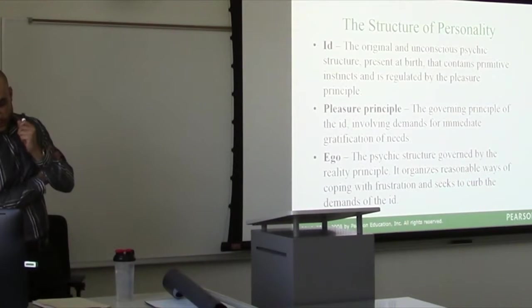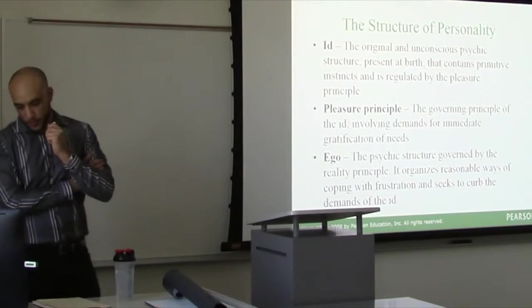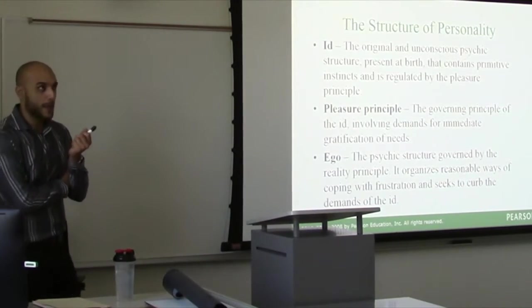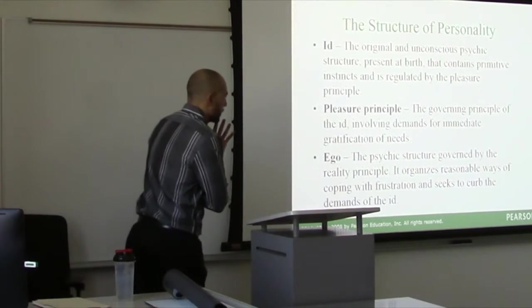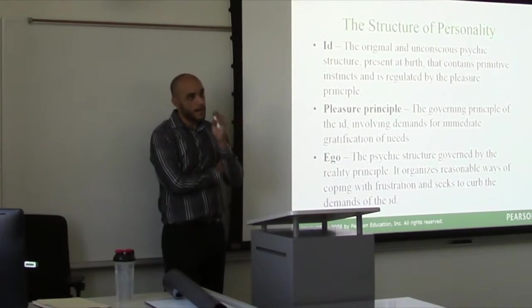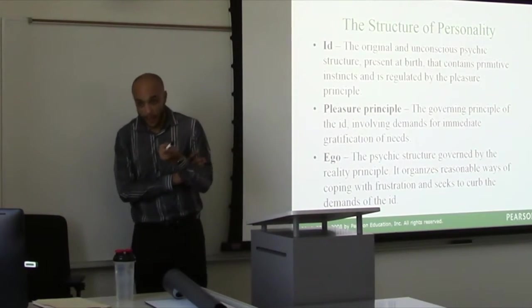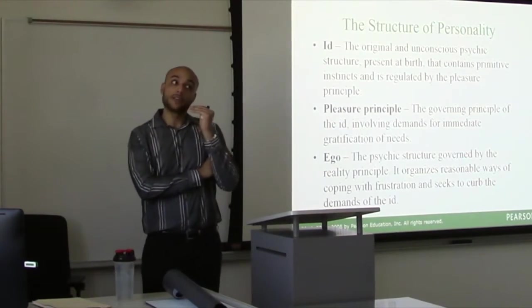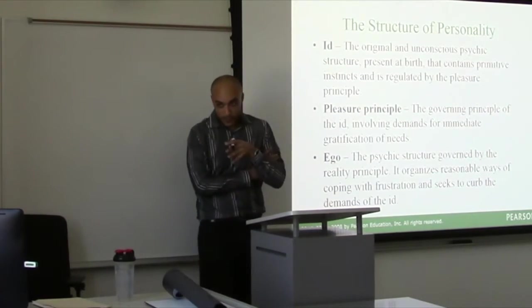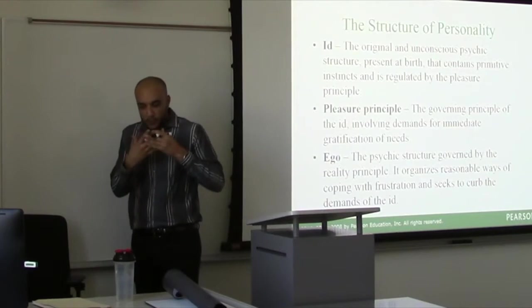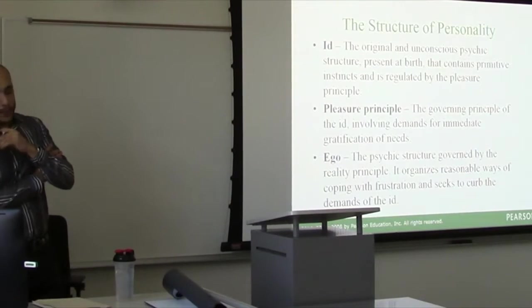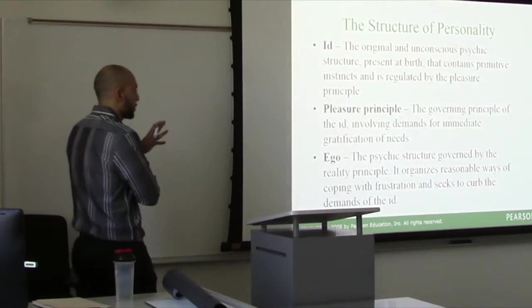The ego is the psychic structure governed by the reality principle that organizes reasonable ways of coping with frustration and seeks to curb the demands of the id. Like, okay, I can't smoke that joint now or go to my girlfriend's house now, I need to do my homework now but I'll do that later. It's not realistic for me to have pleasure now, I need to go to work and then afterwards. The ego helps to regulate the id a little bit and is based more in reality than just on pure pleasure.